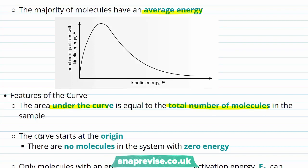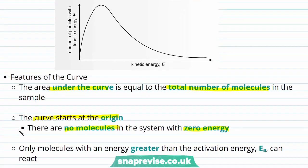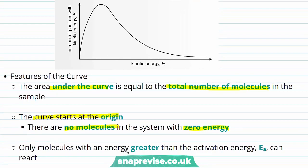Second, the curve starts at the origin — there are no molecules in the system with zero energy. And thirdly, only molecules with a greater energy than the activation energy can react. We can mark the activation energy onto our graph where it applies.